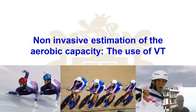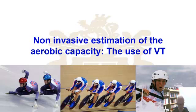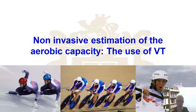Therefore, what we're going to address today is an alternate approach — a non-invasive estimation of the aerobic capacity — the use of what is referred to as the ventilatory threshold. We're going to use expired air and the collection of expired air in the form of oxygen and carbon dioxide to be able to estimate the aerobic capacity. In other words, that transition we've previously been considering where we move from predominantly aerobic to predominantly anaerobic metabolism.